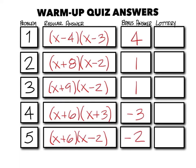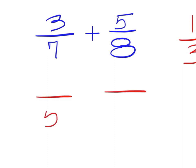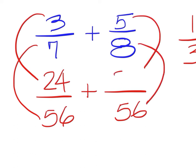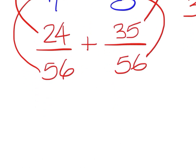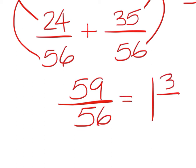This is the same scoring as the warm-up quiz. Your lottery numbers are 10, 4, 5, 7, 2. Try this basic review problem: 3 over 7 plus 5 over 8 — express your answer as a mixed number if necessary, but always reduce. The common denominator between 7 and 8 is 56. Three times 8 is 24; 5 times 7 is 35. Adding 24 and 35 gives 59 over 56, which is 1 and 3 fifty-sixths.